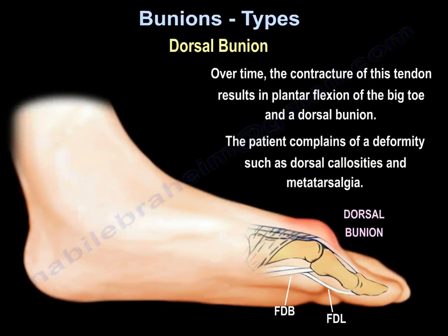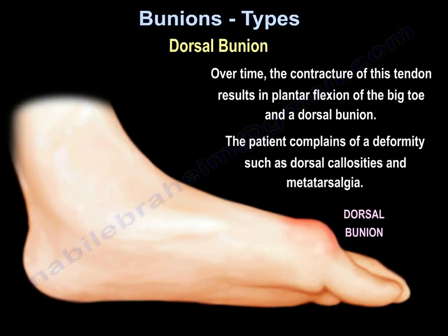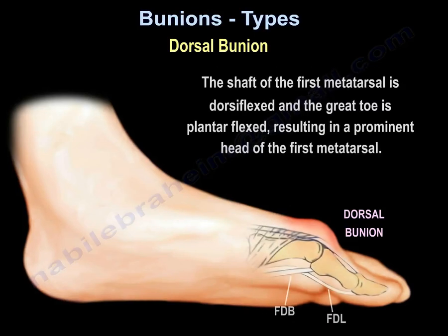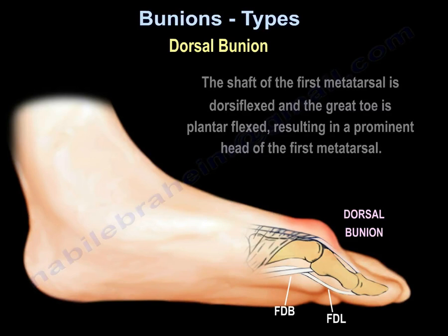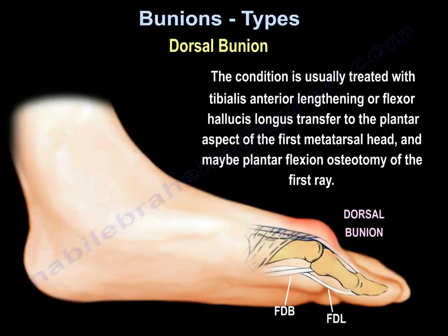Over time, the contracture of these tendons results in plantar flexion of the big toe and the dorsal bunion. The patient complains of deformity such as dorsal callosities and metatarsalgia. The shaft of the first metatarsal is dorsiflexed and the great toe is plantar flexed, resulting in a prominent head of the first metatarsal. The condition is usually treated with tibialis anterior lengthening or flexor hallucis longus transfer to the plantar aspect of the first metatarsal head, and possibly plantar flexion osteotomy of the first ray.